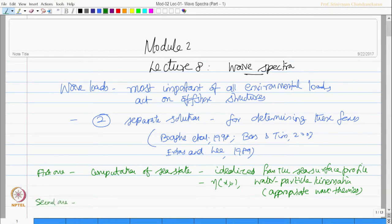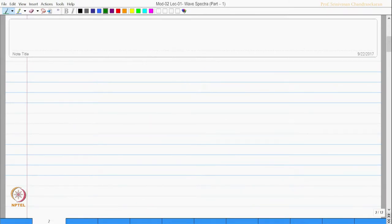The second one is computation of wave forces on individual members and on total structure. There are two stages involved in this. One can look into two different analysis: single design wave analysis or random wave analysis.